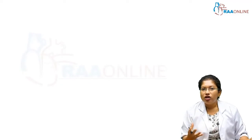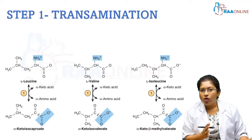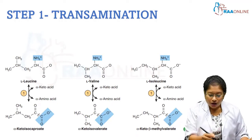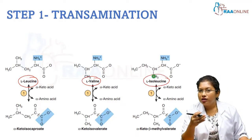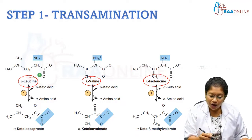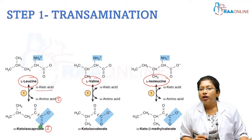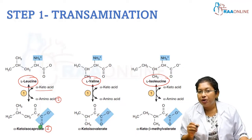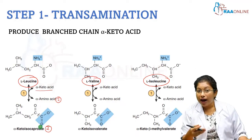Now we'll see the metabolism of branched chain amino acids. The first step is transamination. You can see all three branched chain amino acids — leucine, valine, and isoleucine — in one picture. They undergo transamination. Since they are amino acids, transamination gives a keto acid. The first amino acid combines with the keto acid to produce the second amino acid and second keto acid. The enzyme here is BCAT, branched chain amino transferase, and it produces branched chain alpha keto acid.